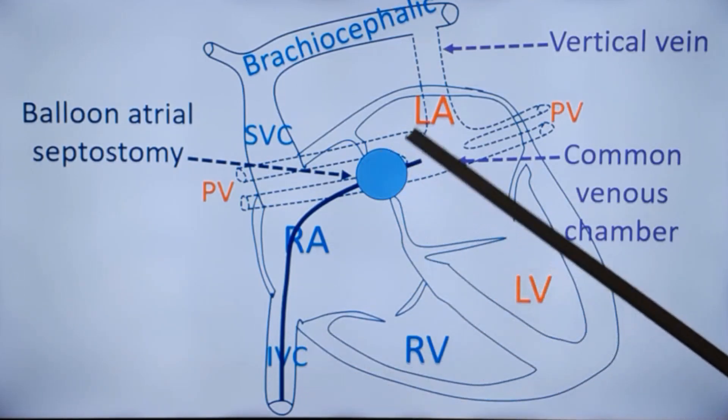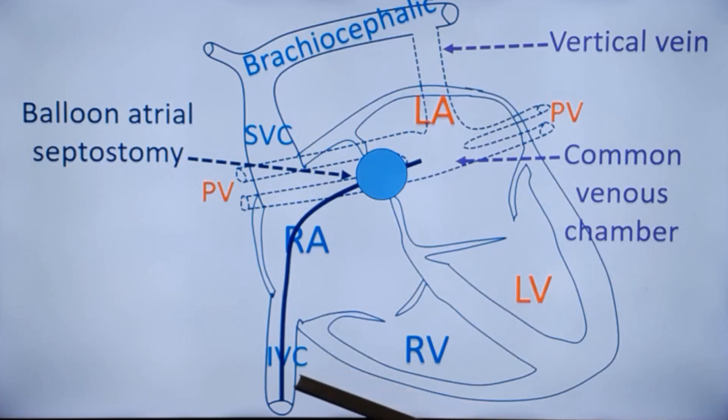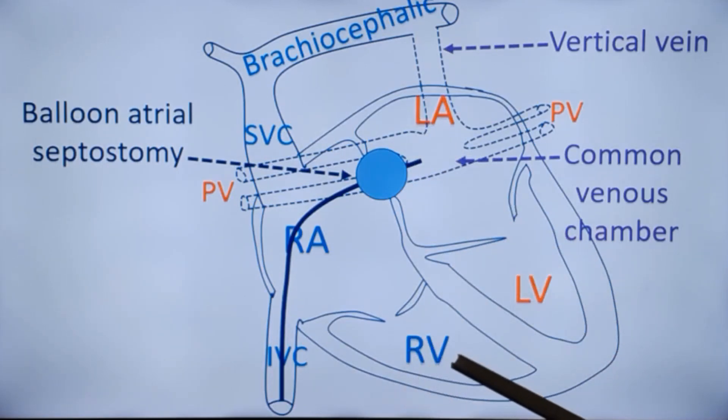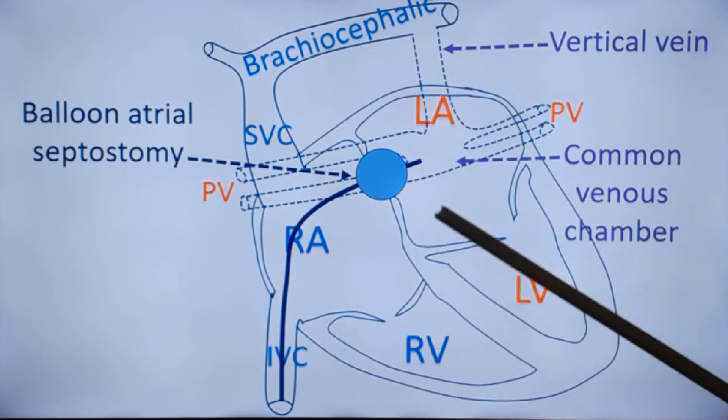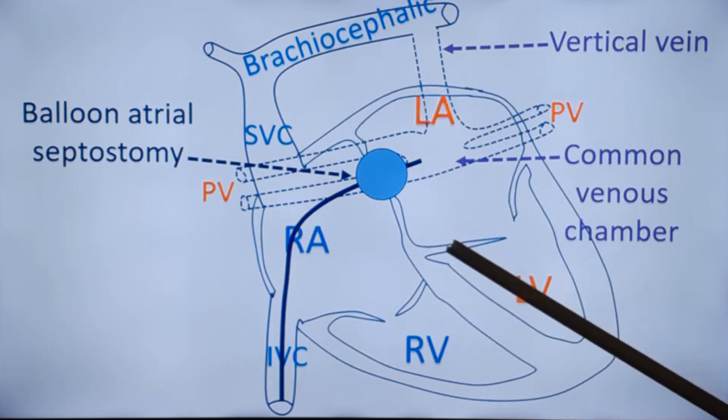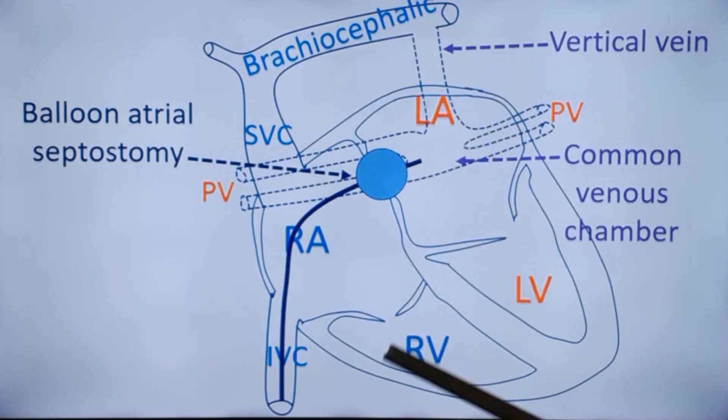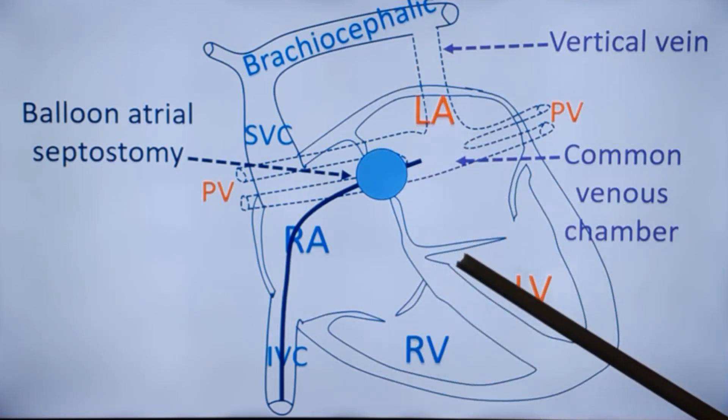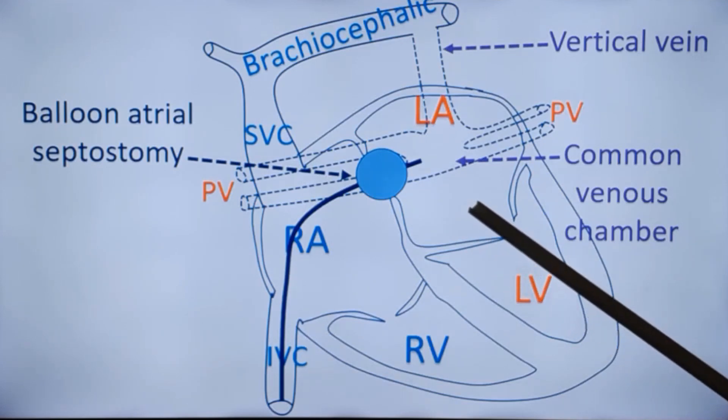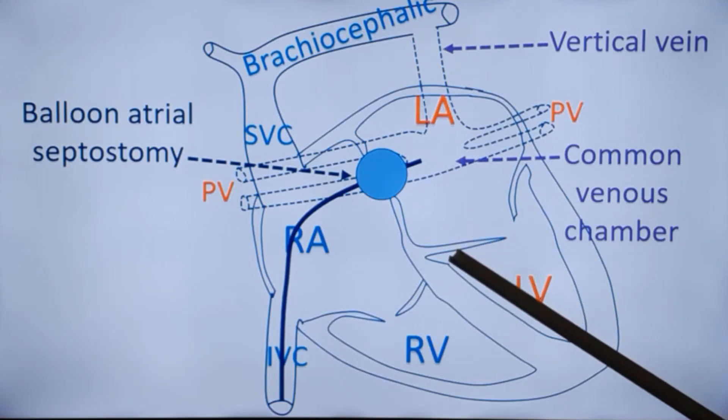A catheter is introduced through the umbilical vein into the inferior vena cava and into the right atrium. And a balloon is inflated across the small ASD, which gets enlarged. If there is a delay, that is after the initial newborn period, this may not respond to balloon dilatation. Sometimes they have a procedure known as blade atrial septostomy as well. And after stabilization, they are taken for corrective surgery.